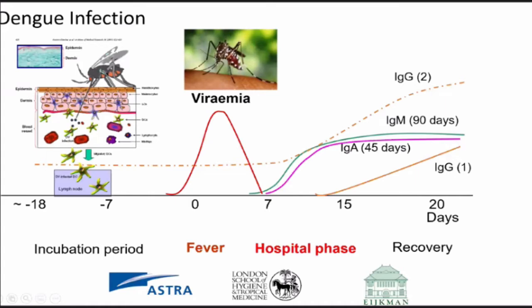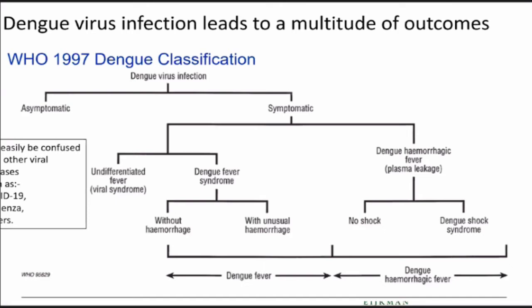For the virus, that's the end of the story. At this point, while there's lots of virus in your blood, you need to be bitten again by a second mosquito, and the virus then leaves and transmits via this mosquito. But unfortunately for humans, that's not the end of the story. While the virus leaves and the viremia drops, the hospital phase and the disease starts — and this is why we have the problem of dengue disease.